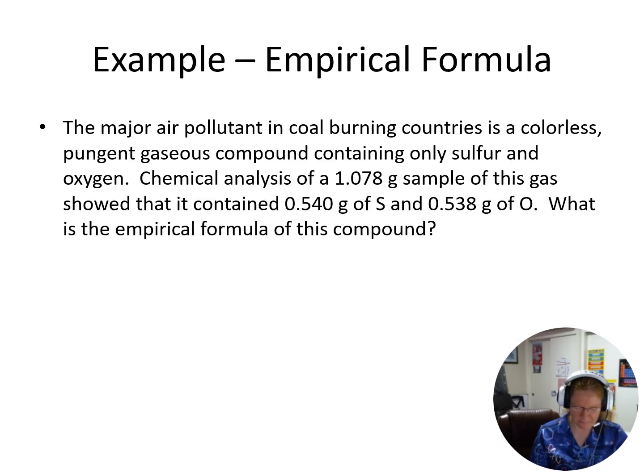All right, so let's try these. So we'll start with this right here. So we've got an air pollutant is this colorless pungent gaseous compound that contains sulfur and oxygen. So these sulfur oxide compounds are not good for the atmosphere. They react in the atmosphere and we end up with sulfuric acid. So we have an analysis of this gas, we have a number of grams of sulfur, a number of grams of oxygen. How do we determine the empirical formula?